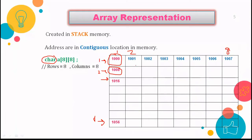A 2D array is a collection of 1D arrays, and every row will store one planet name. Because the planets are stored as strings, that is why we have taken the data type character. Earth comes first if we arrange all the planets in ascending order. E, then R, then T, H — in this way every cell represents a character of the planet name. The next is Jupiter, which we will be representing similarly.